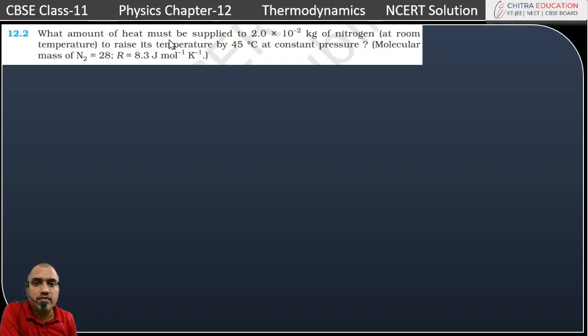What amount of heat must be supplied to 2.0 × 10⁻² kg of nitrogen at room temperature to raise the temperature by 45 degrees Celsius at constant pressure? The change in temperature ΔT is equal to 45 degrees Celsius.